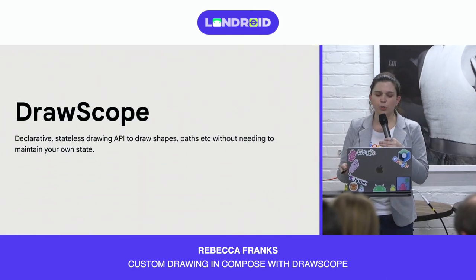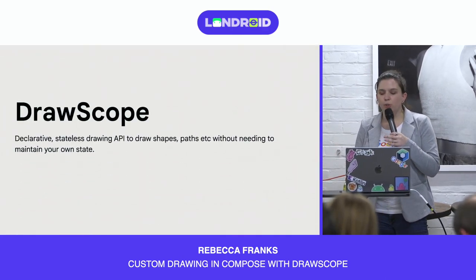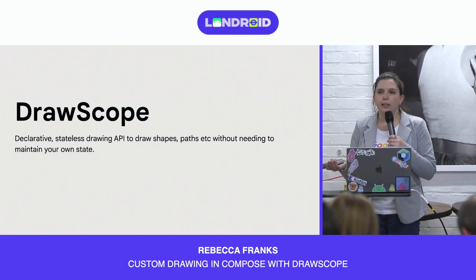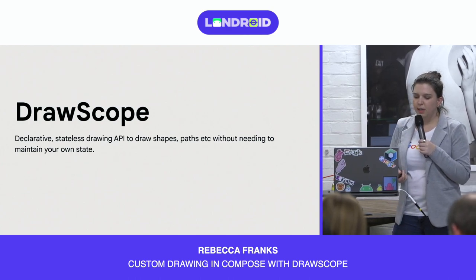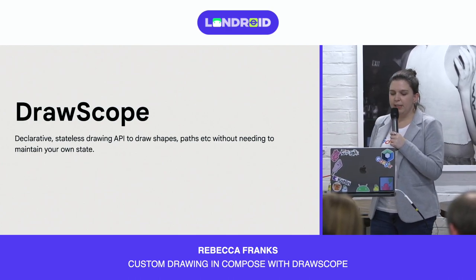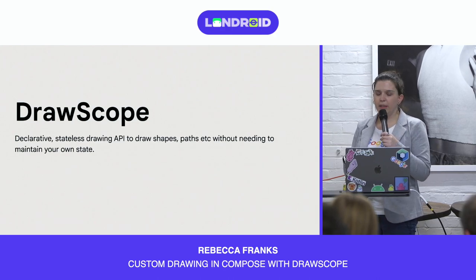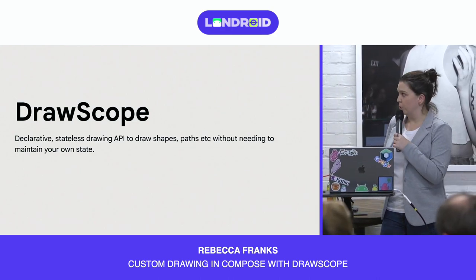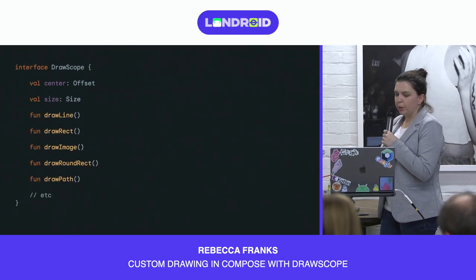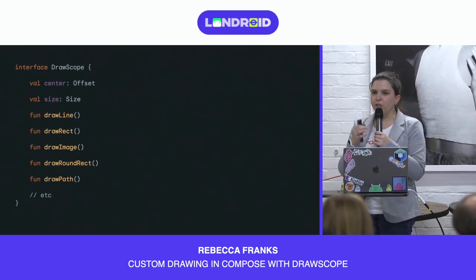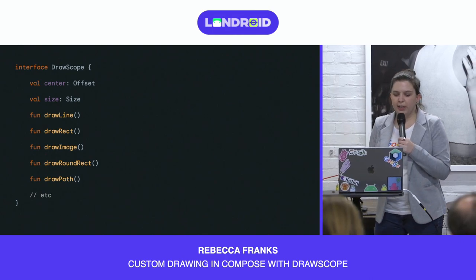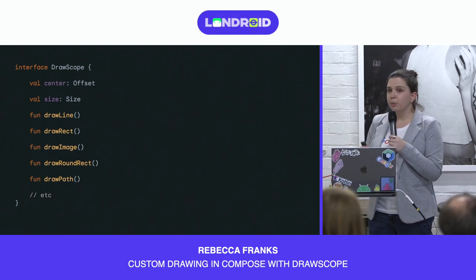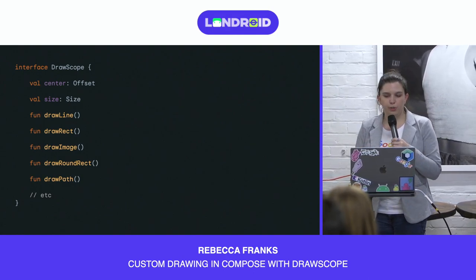So what is actually the DrawScope? It's Compose's answer to declarative stateless drawing. This allows you to call draw functions without needing to maintain your own canvas state. It's a much nicer API than previously when you had to use the canvas to call save and restore — you don't need to do that anymore with DrawScope. Taking a quick look at the definition of DrawScope, you'll see it has a bunch of methods used for drawing. We can also get access to the size and center of the drawing area, useful for adjusting the size and position of an item.